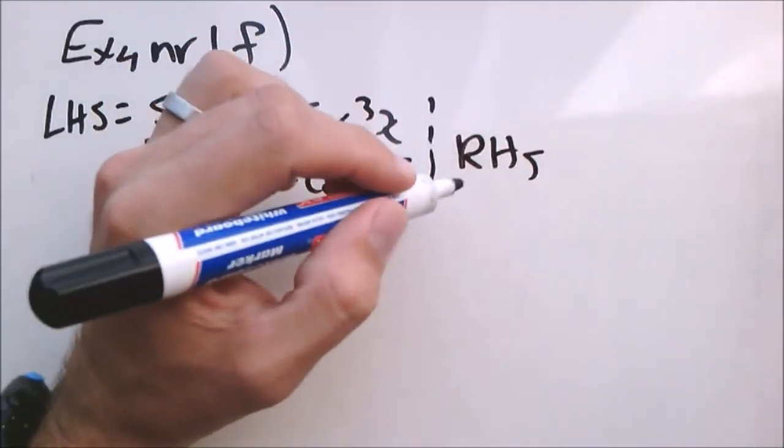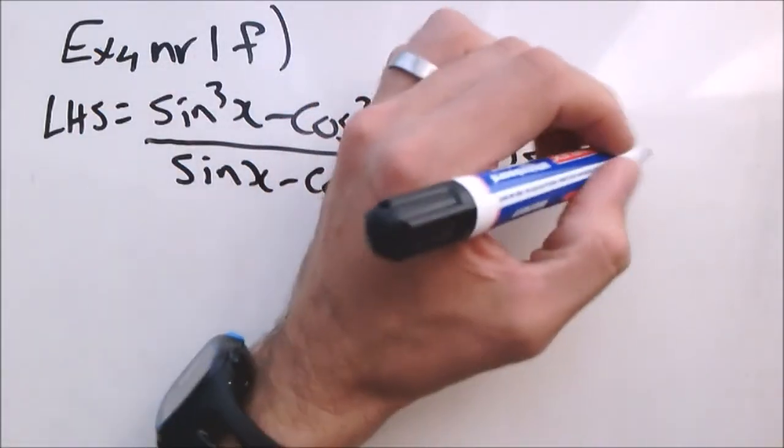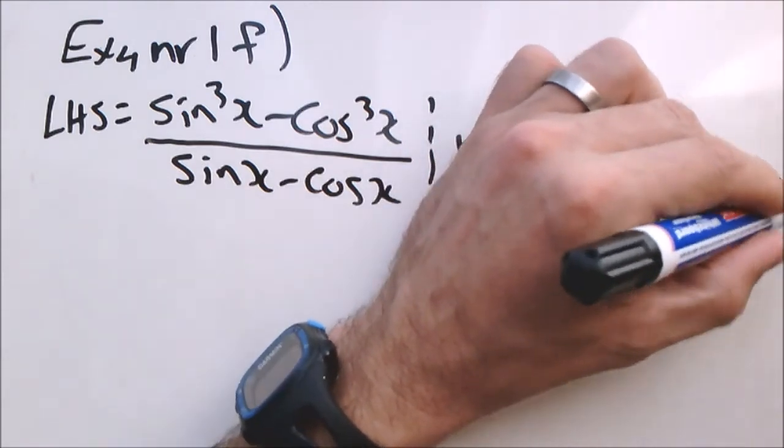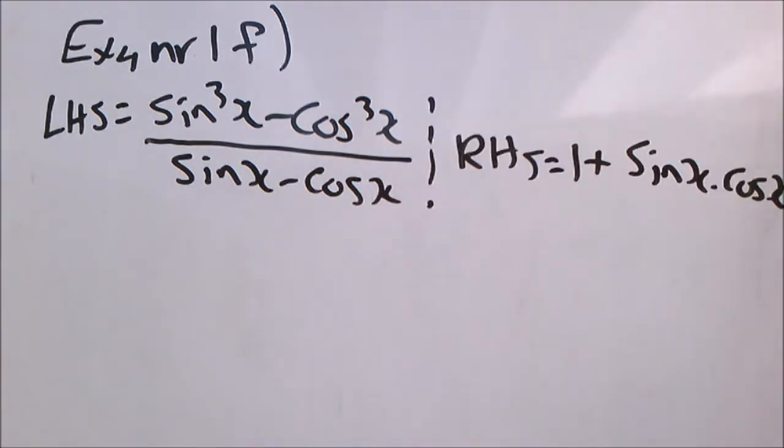The right hand side is equal to 1 plus sin x cos x. Now the left hand side is much easier to work with because of the denominator. When it comes to proving where it's undefined.